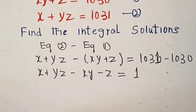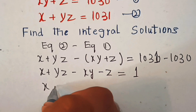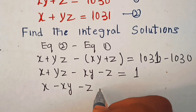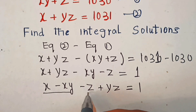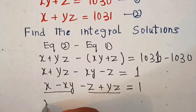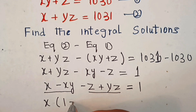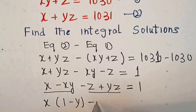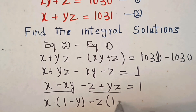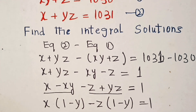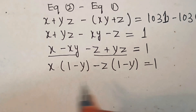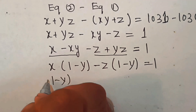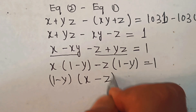Now, can we take something common from here? We'll rearrange the terms and write this as x times (1 minus y) minus z times (1 minus y) equals 1. Now from these two terms, we can take out (1 minus y) common, so this becomes (1 minus y)(x minus z) equals 1.